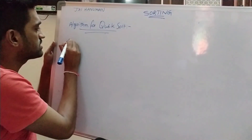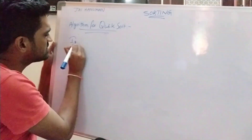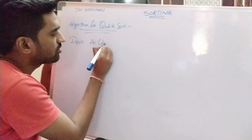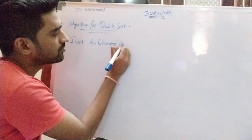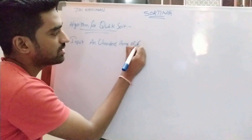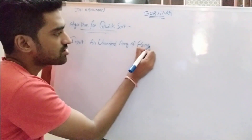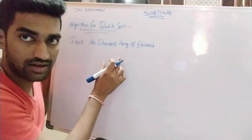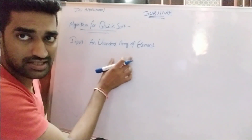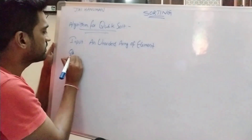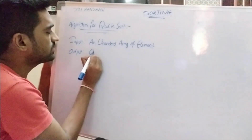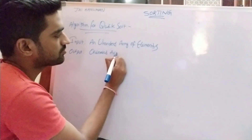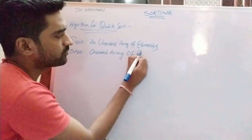The first element is input. For each and every sorting technique, the input is an unordered array of elements. After applying the sorting technique, we arrange all elements in ascending or descending order — that is our output, which is an ordered array of elements.